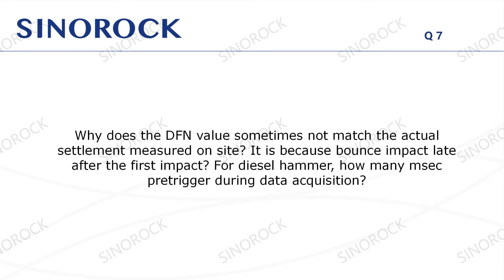Question 7: Why does the DFN value sometimes not match the actual settlement measured on-site? The DFN value given in the PDA is the result of twice integrating the original acceleration curve. Generally speaking, the two values are almost the same. The main reasons for inconsistency in the actual test are the eccentricity of the hammer, the difference of the concrete at the installation position of the sensor, the local difference, and the looseness of the sensor. When we manually measure the DFN, we should take the result of manual measurement as the standard.